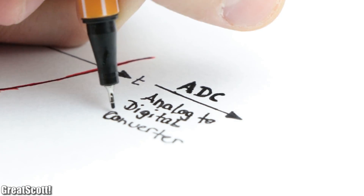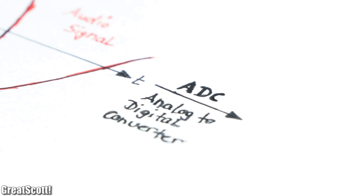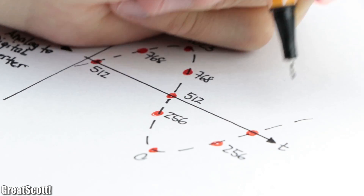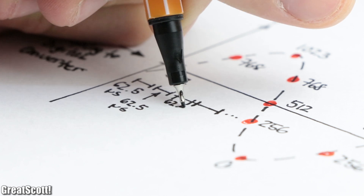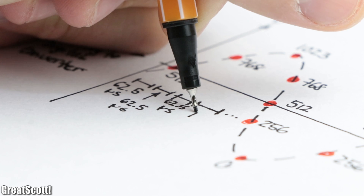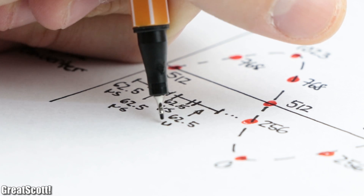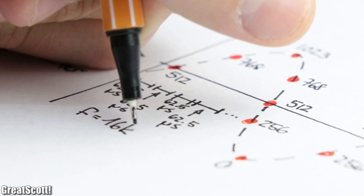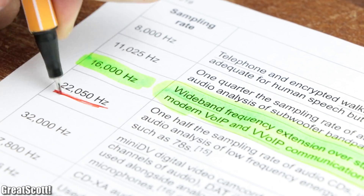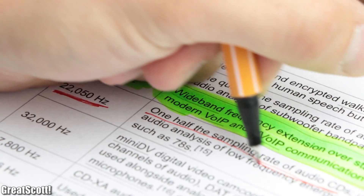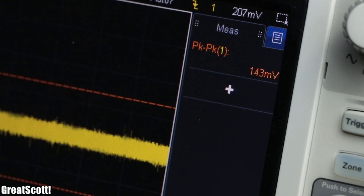This audio signal needs to get sampled by the ADC, or analog-to-digital converter, of the microcontroller in order to turn the analog voltages of the signal into digital values that we can later send. This also requires the 16-bit timer to trigger one ADC conversion every 62.5 microseconds, which equals a sampling rate of 16kHz. This sampling rate does not offer the best audio quality, but let's play it safe for this first experiment.